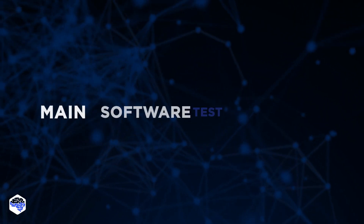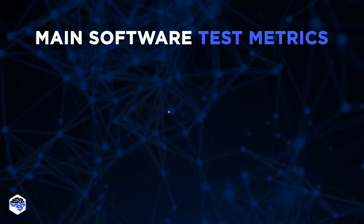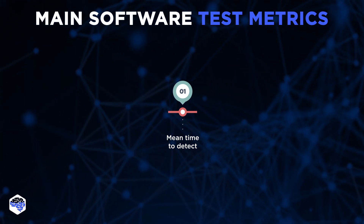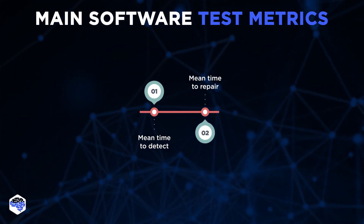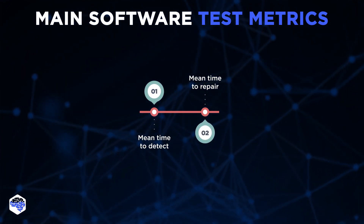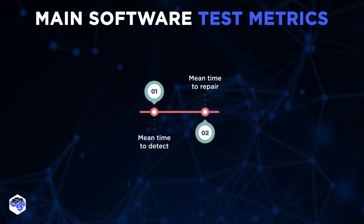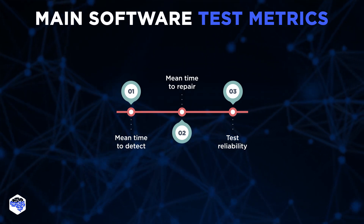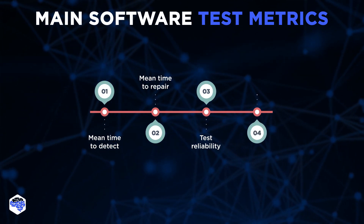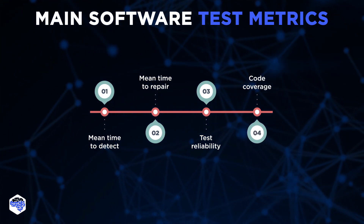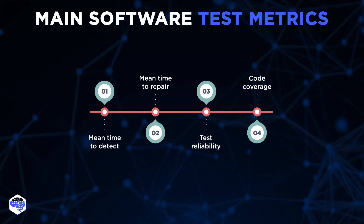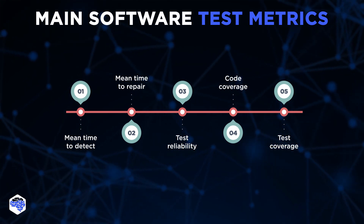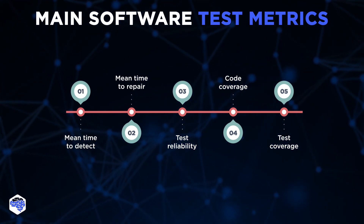What are the main software test metrics we use? Mean Time to Detect: these metrics show how much time it will take to discover an issue. Mean Time to Repair: it shows how much time the organization will need to fix the issue. Test reliability refers to the percentage of tests that provide helpful feedback. Code coverage is the percentage of the code base that has been covered by testing. Test coverage helps make sure that we use various types of tests to assess the product.